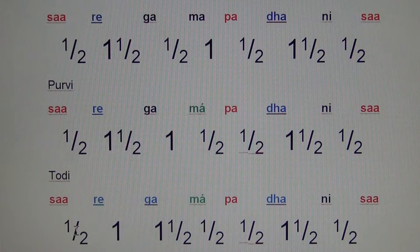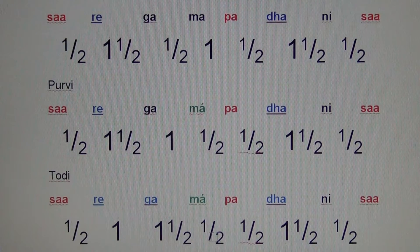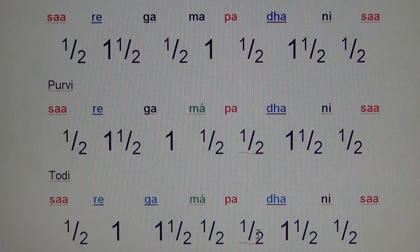That results in an interval formula of: half, one, one-and-a-half, half — and then half, one-and-a-half, half.